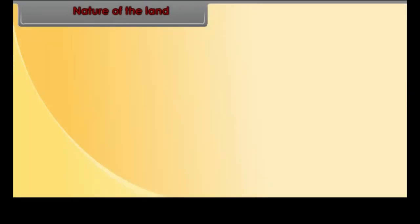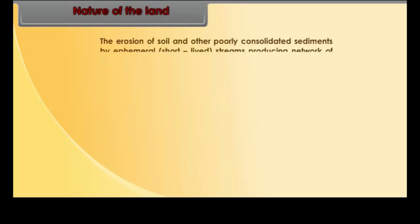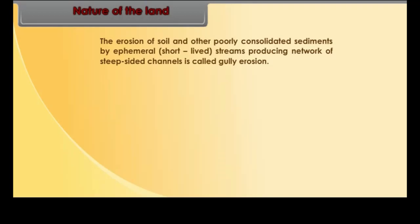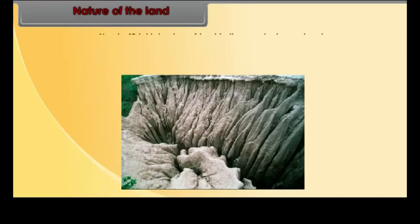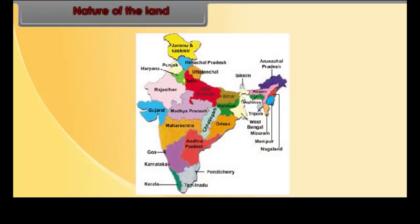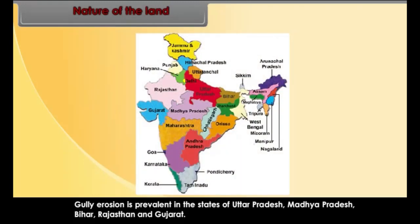Gully erosion — the erosion of soil and other poorly consolidated sediments by ephemeral (short-lived) streams producing a network of steep-sided channels is called gully erosion. Nearly 40 lakh hectares of land in the country have already been degraded due to gully erosion. Gully erosion is prevalent in the states of Uttar Pradesh, Madhya Pradesh, Bihar, Rajasthan, and Gujarat.